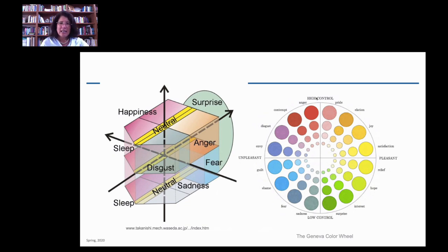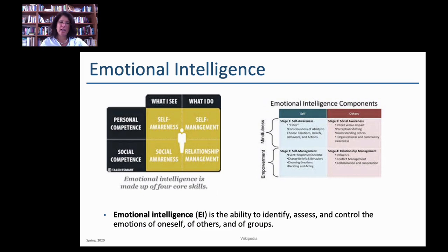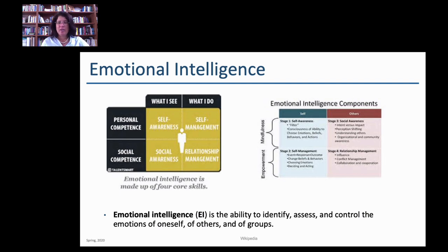When we consider emotional intelligence, there are really just four parameters. One has to do with the self — being able to understand what do I feel, and then being able to manage what I do. The second skill has to do with understanding the other — being able to perceive emotions in other people: I can see he's sad, I can see she's worried. And then how do I manage that? So the scale is first being able to interpret and understand, and then being able to manage it.